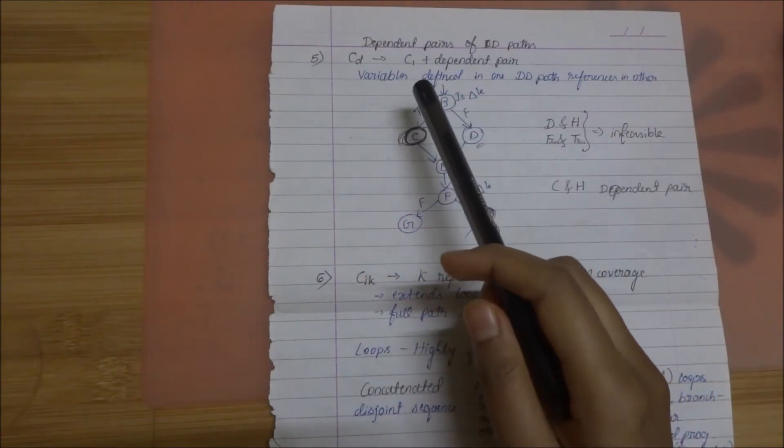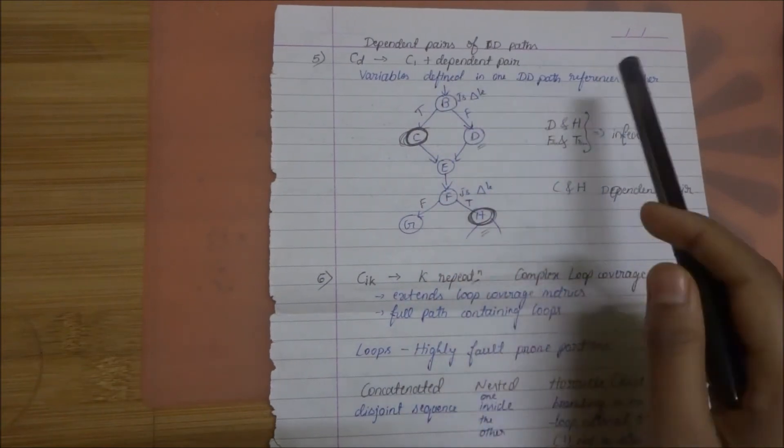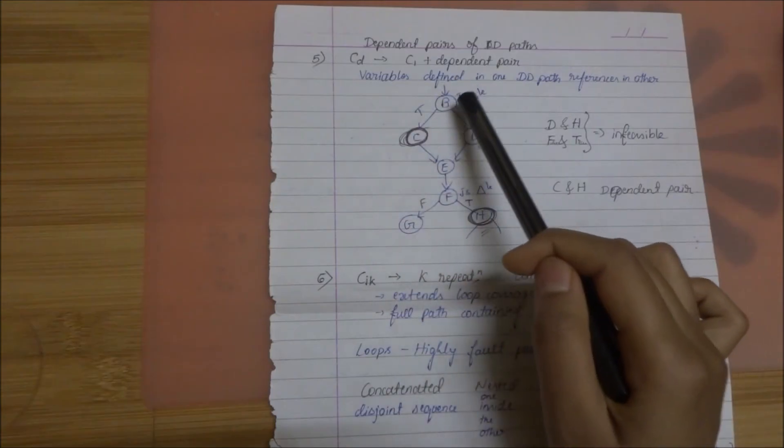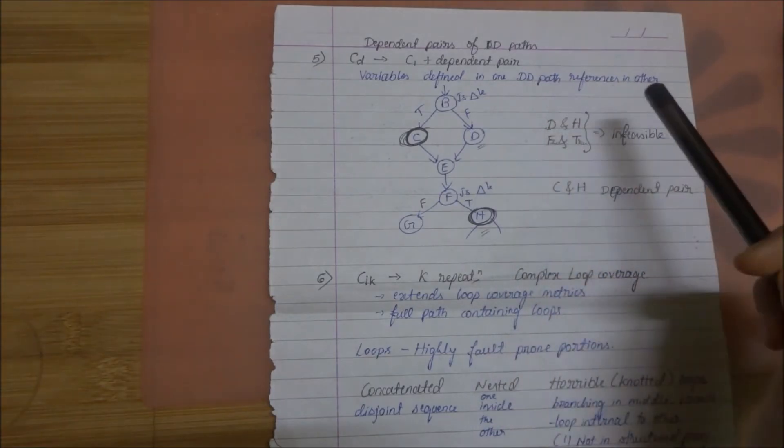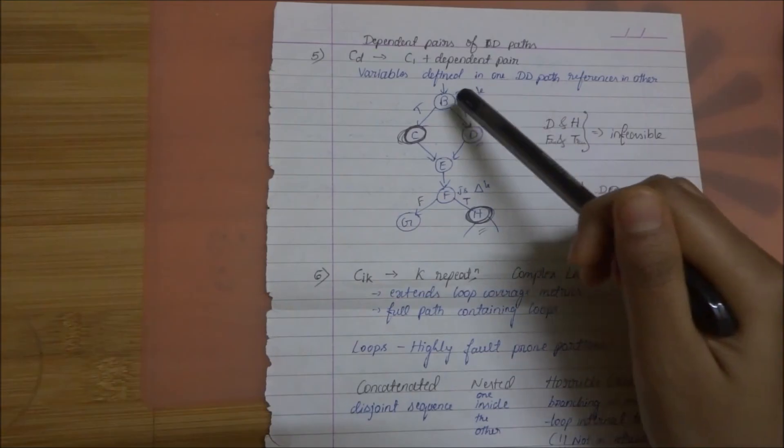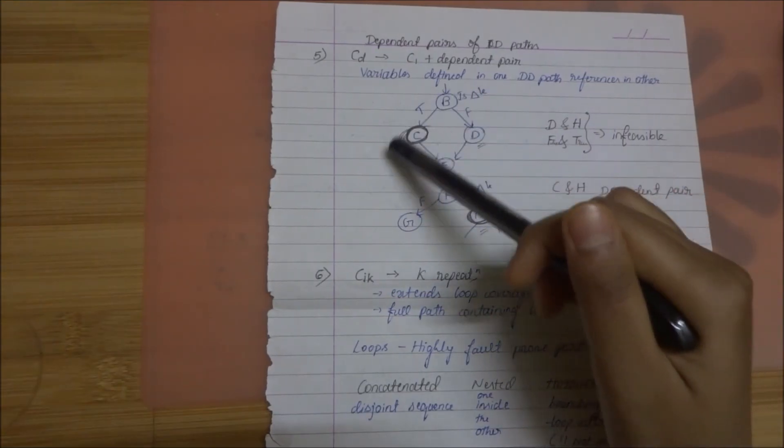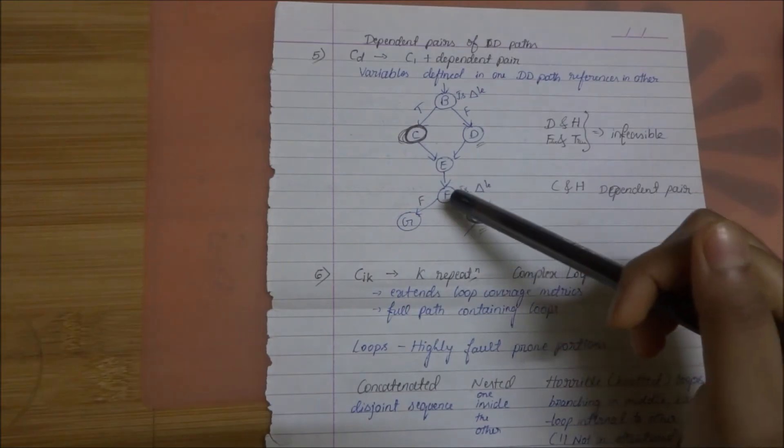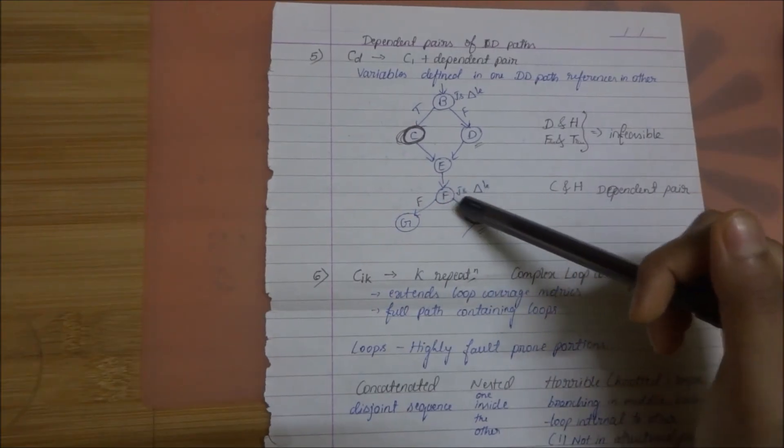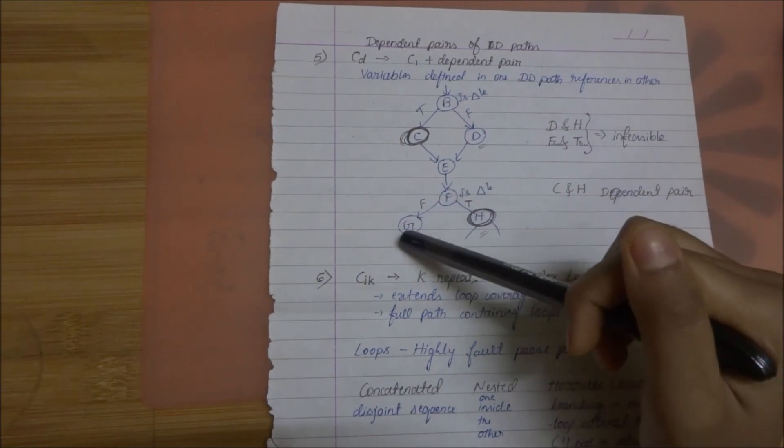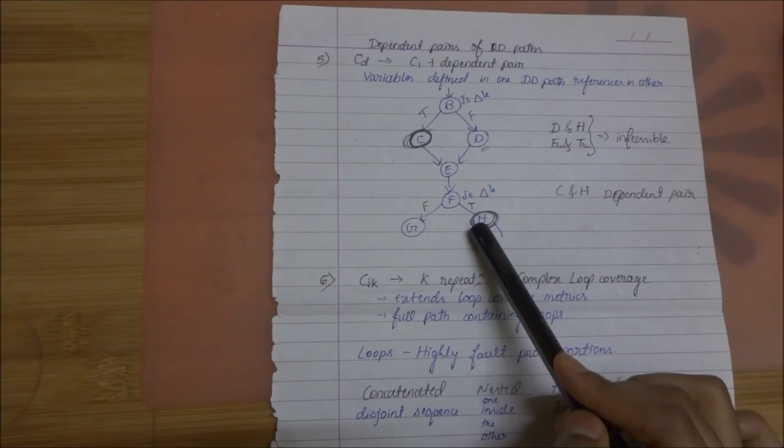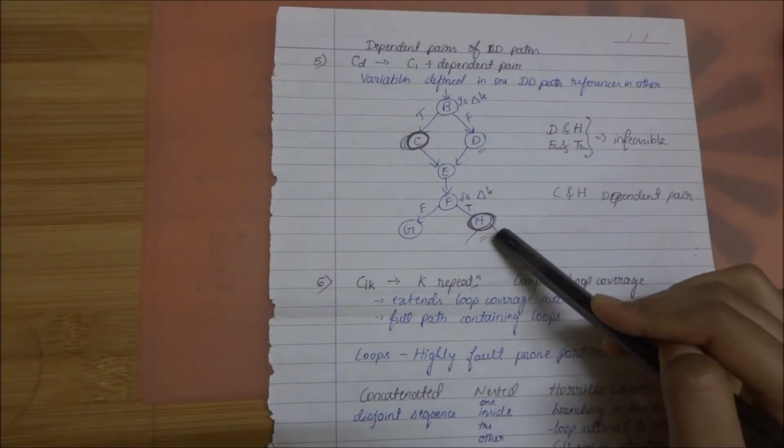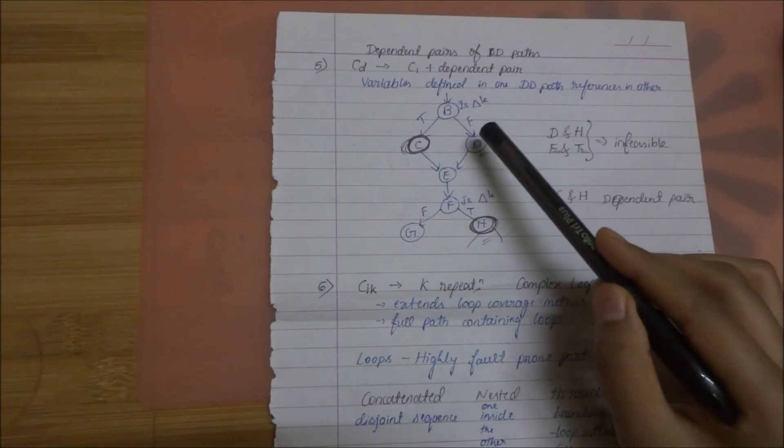Fifth one is CD. It is a combination of C1 and dependent pair. Now what is a dependent pair? Dependent pair means the variables defined in one DD path is referencing to the other. In this example you can see at B you are checking if it's a triangle. If true then you are going to C. If not then you are going to D. Then after some stages at F you are checking if it's a triangle. And then if it's true only then you are going to H else you are going to G. Now here C and H become the dependent pair. Because for it to be a triangle both the cases has to be true. You can tell that D and H are infeasible because they represent two different conditions.